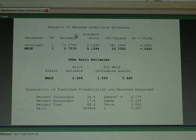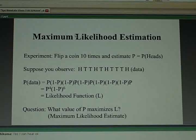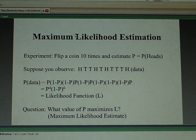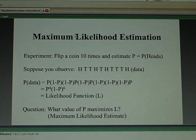Now let's talk about where these numbers come from and what the other numbers in this printout mean. To do that, I want to talk about the fitting method — how SAS and other software packages fit a model to a data set and come up with estimates for b-zero and b-one. To think about that, I want you to imagine you have a coin.